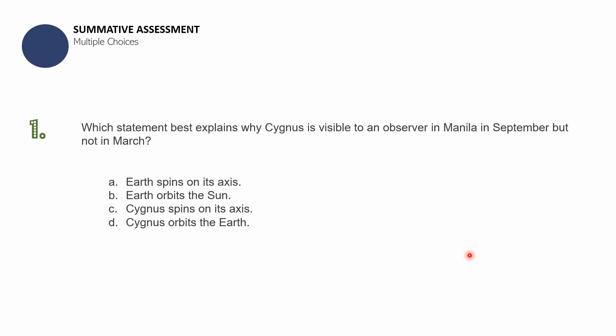Now we need to do the summative assessment comprised of multiple choice questions. Question number one: which statement best explains why Cygnus is visible to an observer in Manila in September but not in March? A — Earth spins on its axis; B — Earth orbits the Sun; C — Cygnus spins on its axis; or D — Cygnus orbits the Earth?